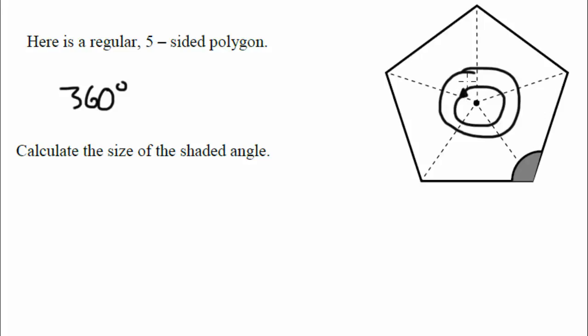And 360 degrees has to be split between these five triangles because if you think about it, this triangle is taking a fifth of the 360. This is another one that's taking a fifth. And this is another one that's taking a fifth. Okay, so that's why you work out the angle here. Okay, it looks a bit messy now.